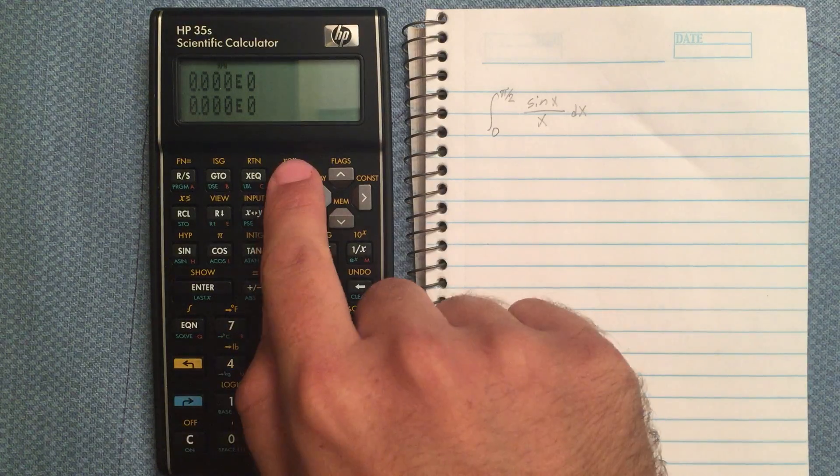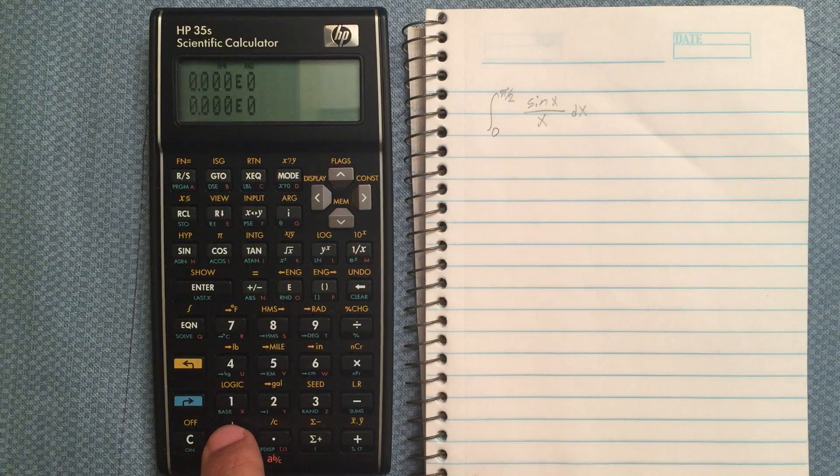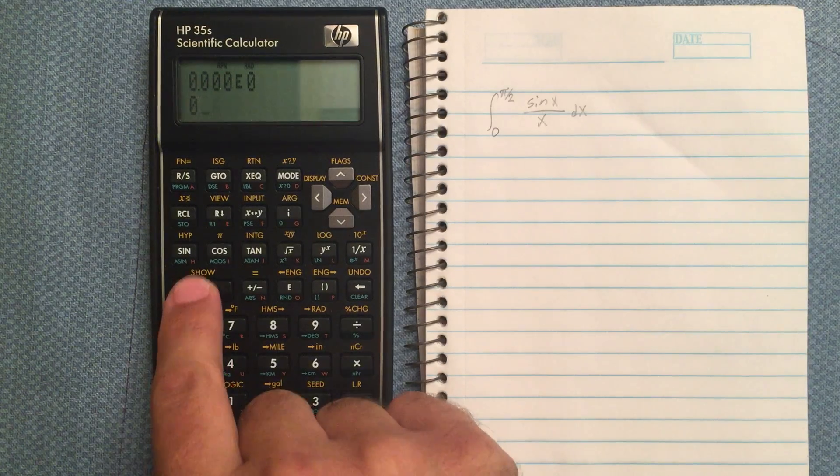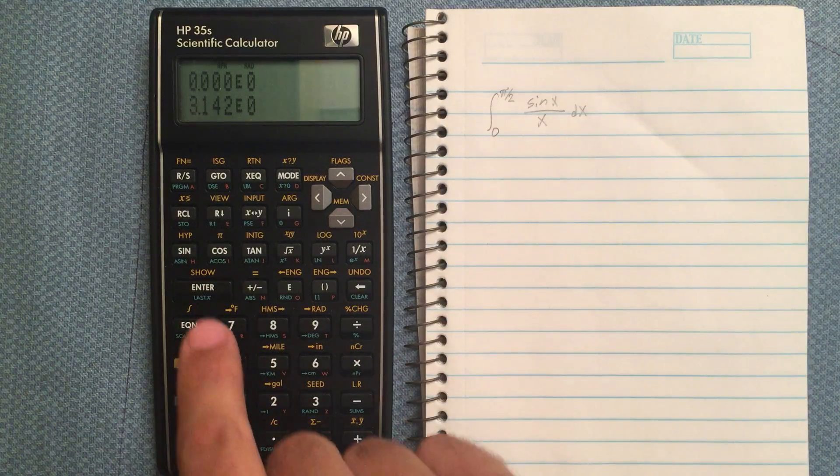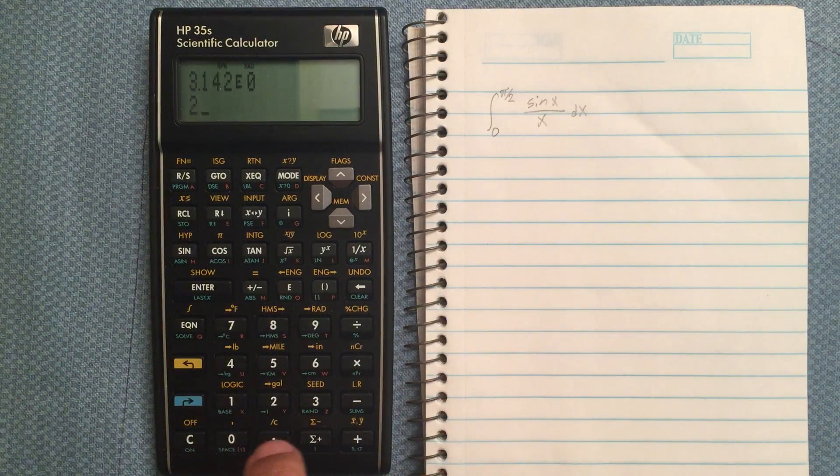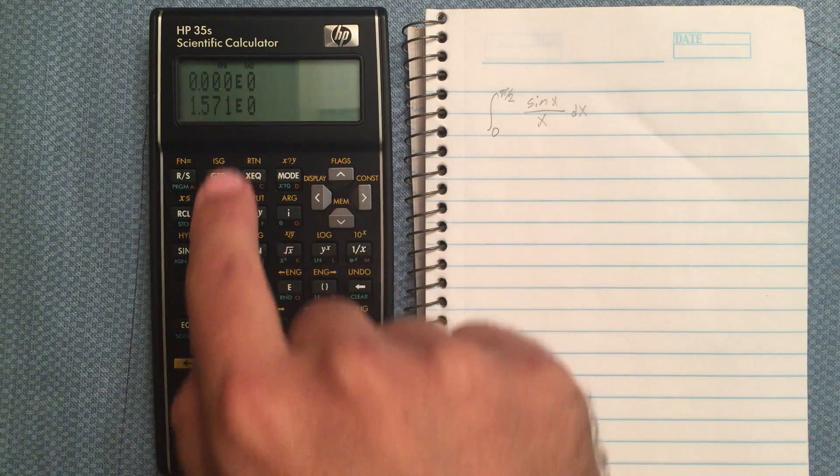We would enter into the calculator, well let me change my mode first to radians. Enter in the calculator, I want to go from 0 to pi over 2, so we've got from 0 to pi over 2.